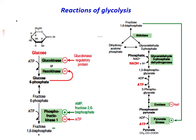Glucokinase regulatory protein inhibits glucokinase in liver tissue. Glucose-6-phosphate, the end product of the hexokinase-catalyzed reaction, inhibits hexokinase by feedback inhibition. PFK1 is allosterically inhibited by ATP and citrate, and activated by AMP and fructose-2,6-bisphosphate. Enolase is inhibited by sodium fluoride. Pyruvate kinase is allosterically activated by fructose-1,6-bisphosphate — an example of feed-forward activation — and is also inhibited by ATP.